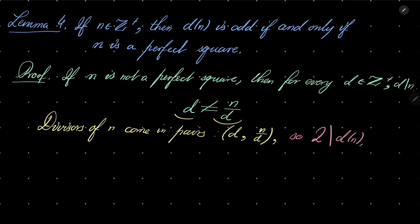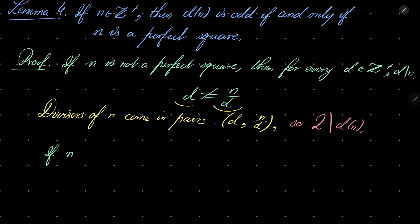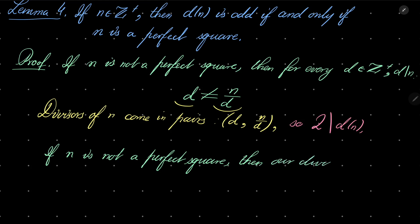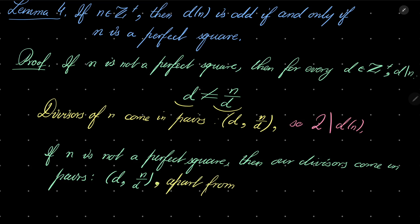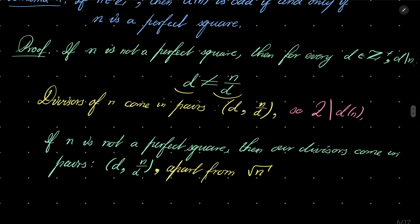And what happens if n is a perfect square? If it is a perfect square, divisors come in pairs d and n over d, apart from the square root of n, which is an integer in this case and has no pair — it's one outlier. So we have an odd number of positive divisors. That closes the proof of my fourth and last lemma.